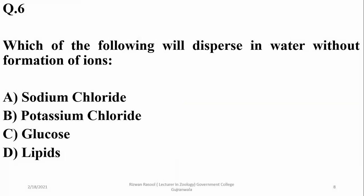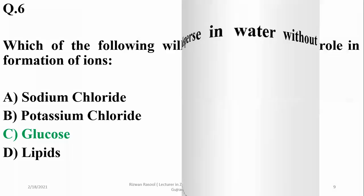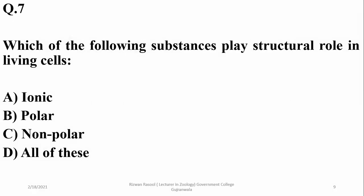Number six: which of the following will disperse in water without formation of ions? Which of the following substances play a structural role in living cells? In water, because of ionic or polar substances, stability is provided.